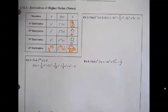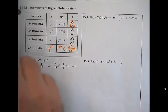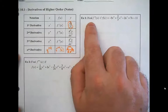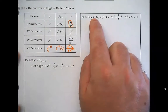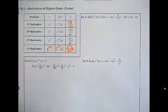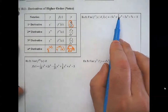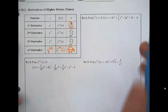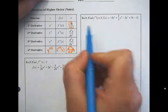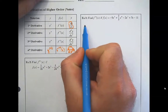Example: find the second derivative, f double prime, of the given function. First I check whether I need to do any rewriting — and it looks like I don't, because everything is already in the right format for the power rule. The power rule says multiply by the exponent and then subtract one. So f prime...